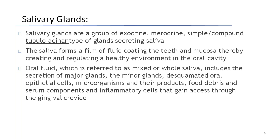Other types of glands are merocrine, holocrine, and apocrine glands. The saliva forms a film of fluid coating the teeth and mucosa, thereby creating and regulating a healthy environment in the oral cavity. The oral fluid, referred to as mixed or whole saliva, includes the secretion of major glands, minor glands, desquamated oral epithelial cells, microorganisms and their products, food debris, and serum components and inflammatory cells that gain access to the gingival crevice.